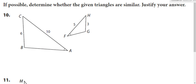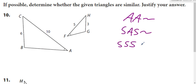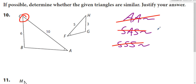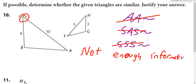Determine if the triangles are similar and justify your answer. We're looking for angle-angle, side-angle-side, or side-side-side. We only know one angle in each triangle, so it cannot be angle-angle. We only know two sides, so it cannot be side-side-side. For side-angle-side, the angle needs to be included between the two sides — not off to the side. So it's also not side-angle-side. There is not enough information to determine similarity. The sides 6/3 and 10/5 are proportional, but that doesn't help if the angle is not included between them.